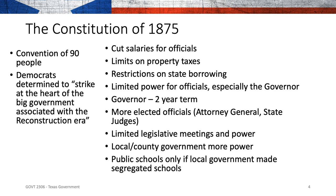The Democrats wanted to strike at the heart of big government associated with the Reconstruction era. If you're thinking that limited government sounds more like a Republican Party thing, you're right. The parties have switched their ideologies on certain issues over the years. At the time of 1875, Democrats were the ones in charge in Texas, but they said they wanted less big government.